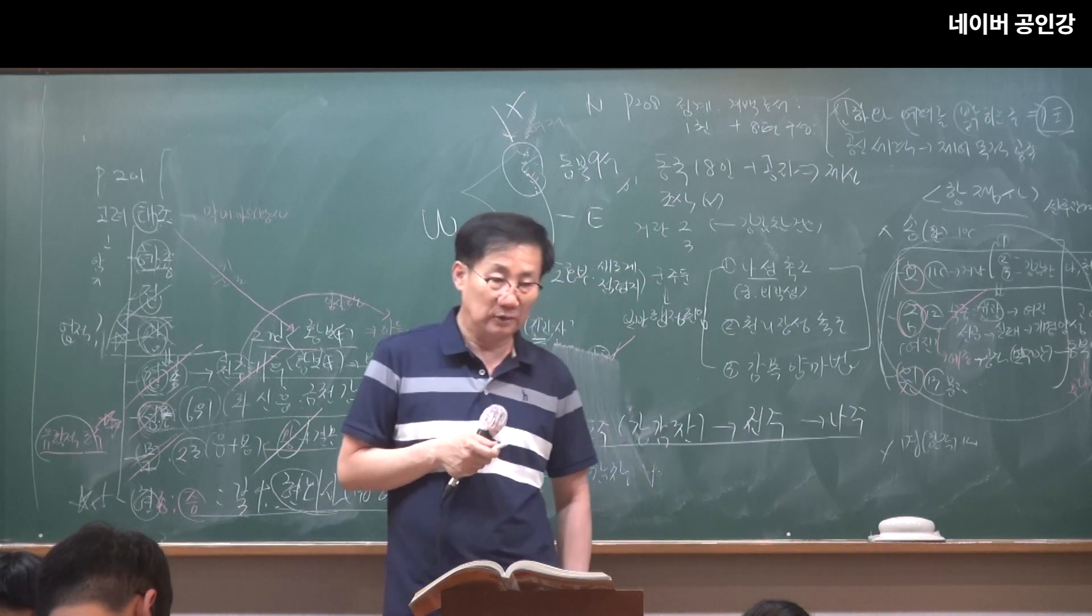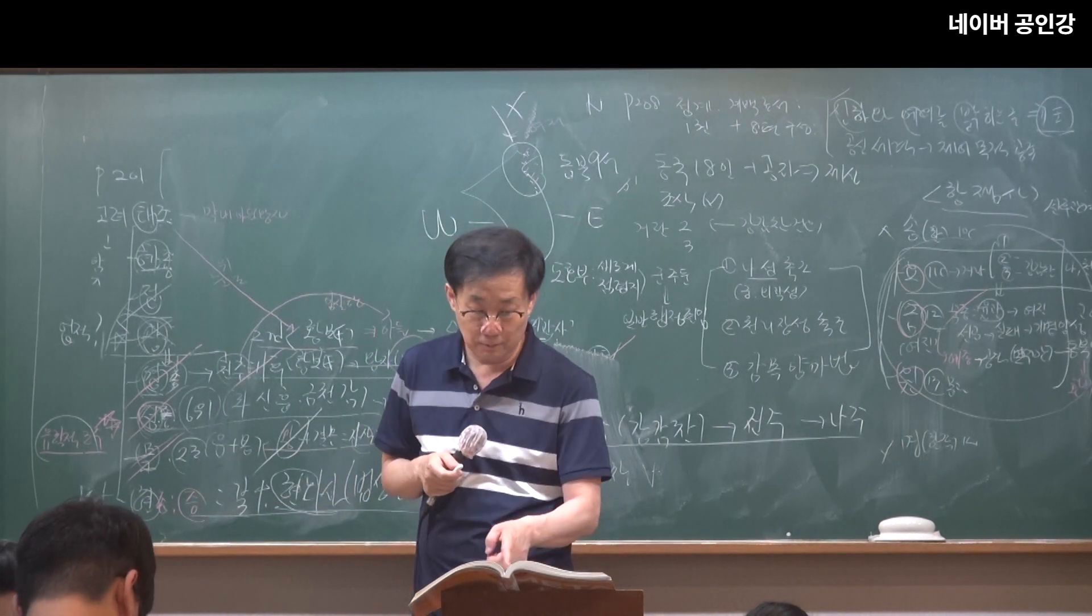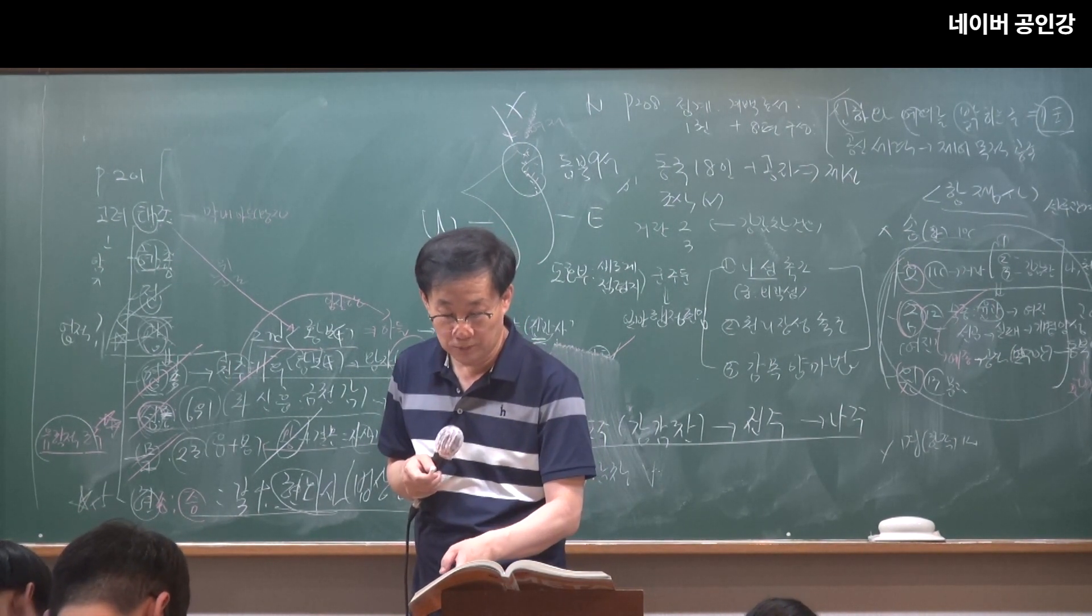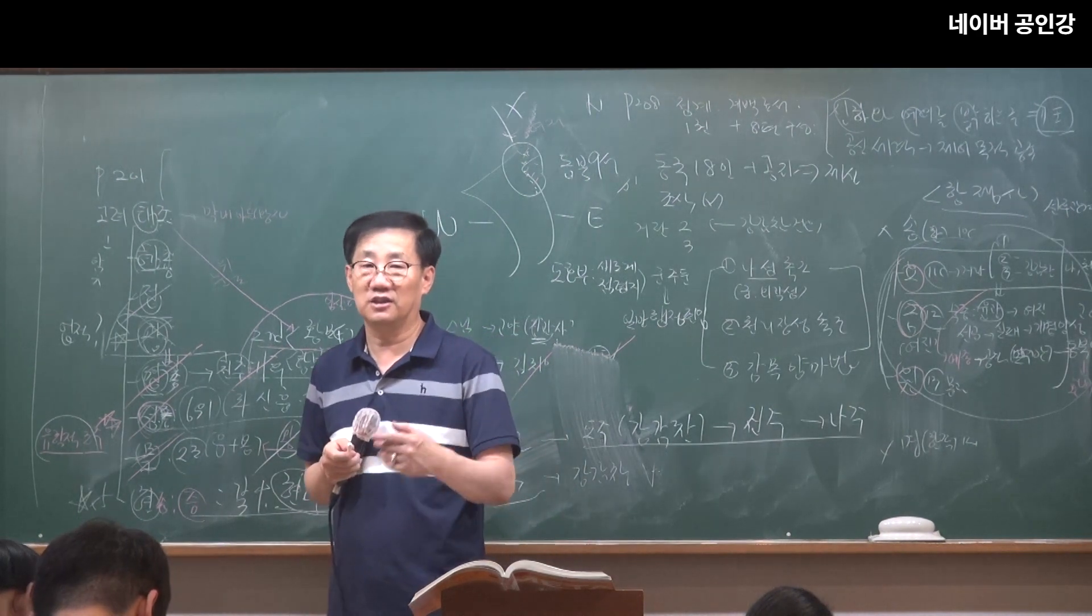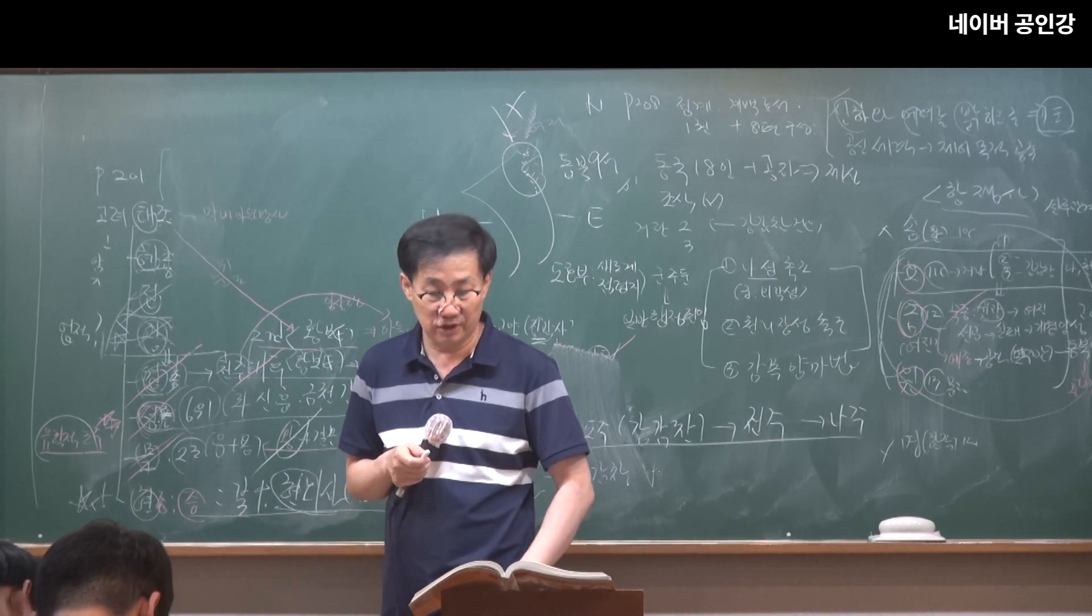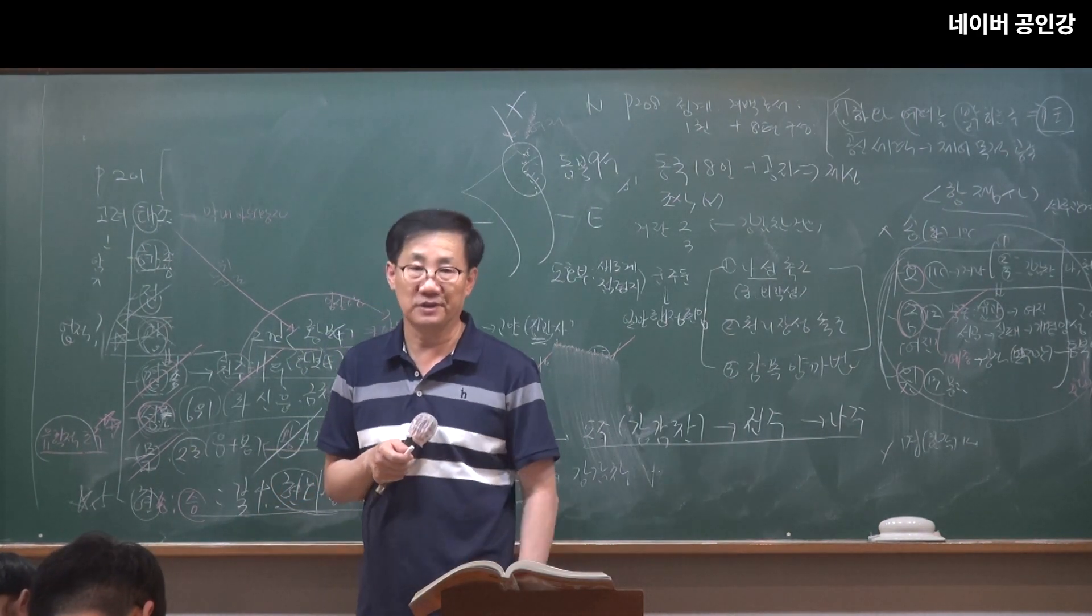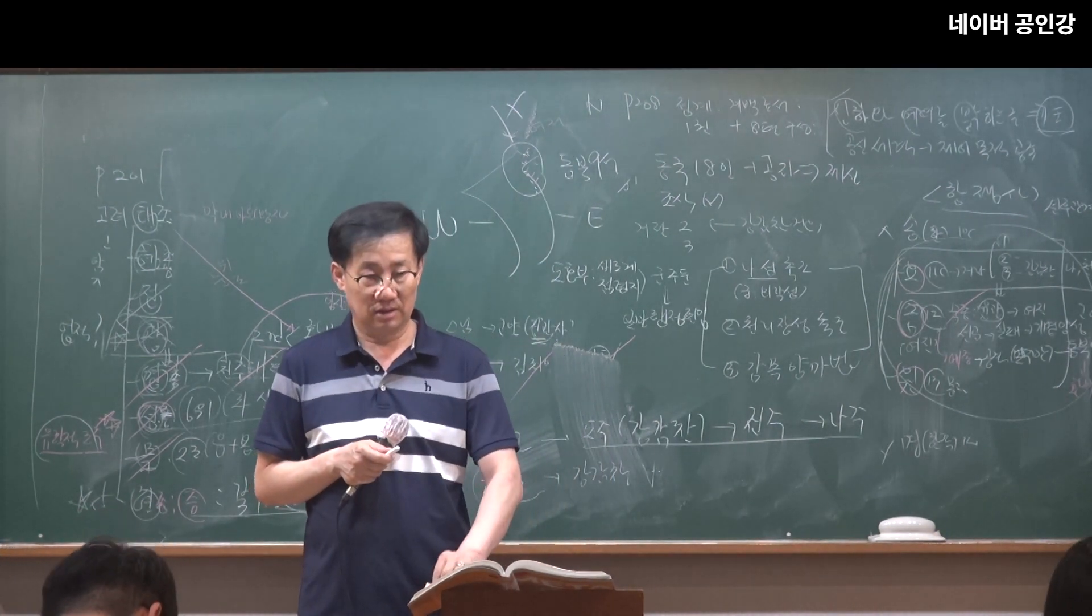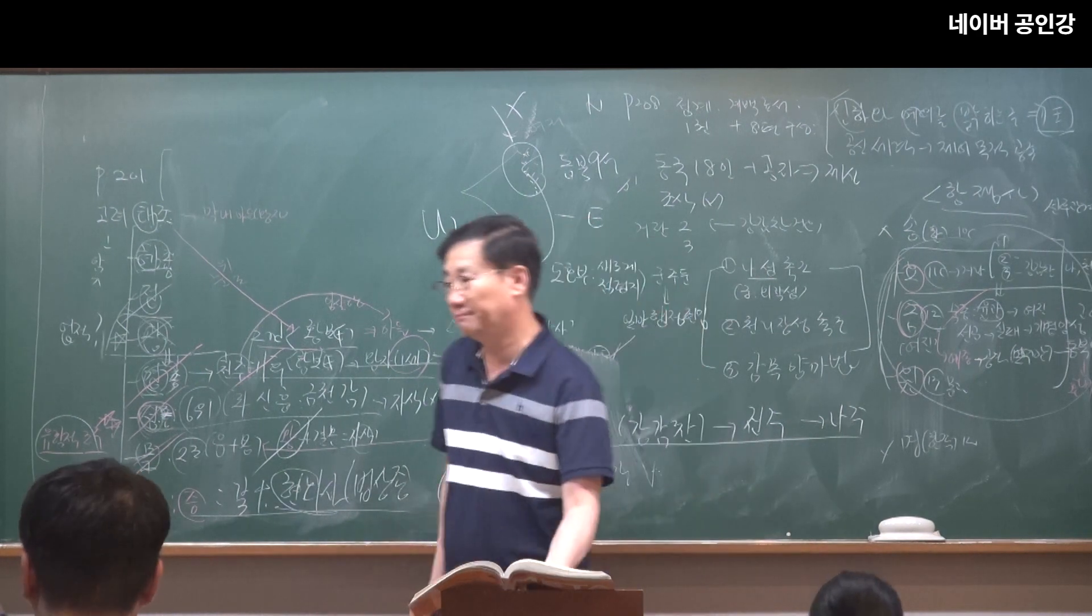덕종. 거란과 여진 침입에 대비하여 압록강에서 동해안의 도련포까지 천리장성 축조. 거란의 침입에 대비하여 압록강에서 누가 건의한 거죠, 이거? 강감찬의 건의해서 밑에 실수하게 됐다. 압록강에서 쭉 동해안 도련포까지 이렇게 천리장성 축조했대요. 누구에 대비해서? 거란과 성장하는 여진에 대비해서. 그 다음에 덕종 말년에 인주 이씨 등이 집권하면서 귀족사회가 보수화되었다.